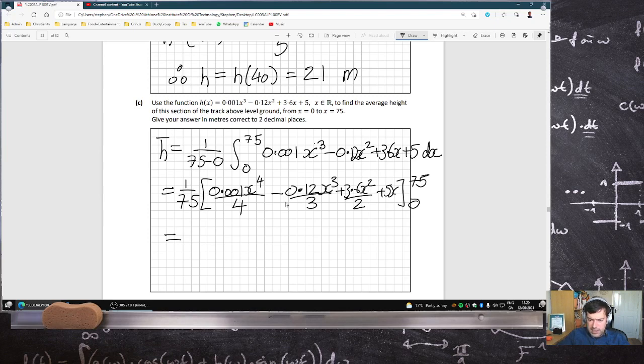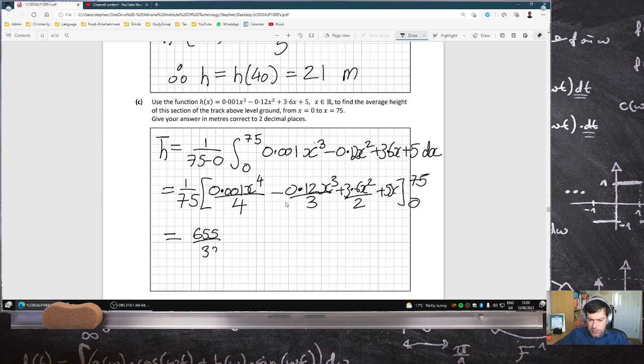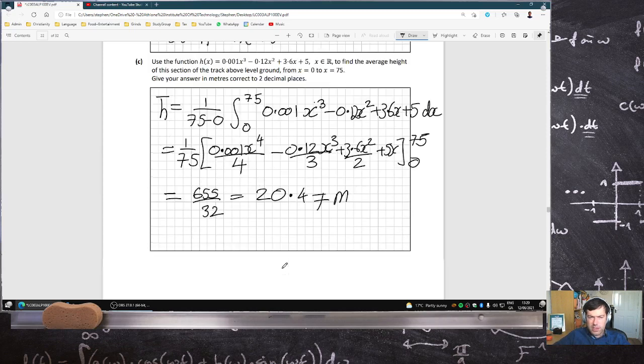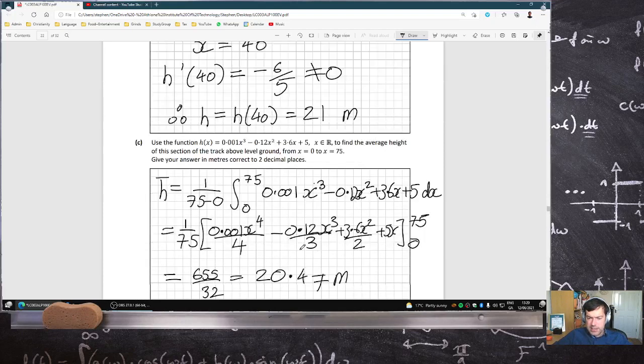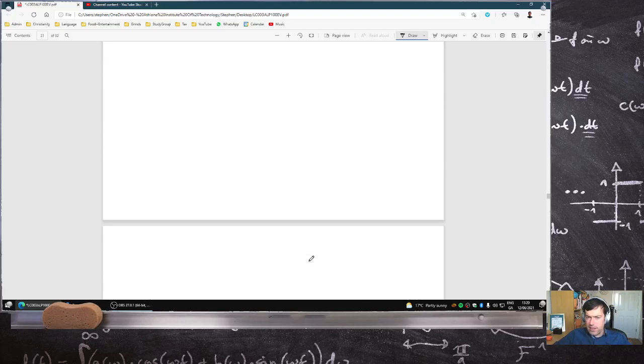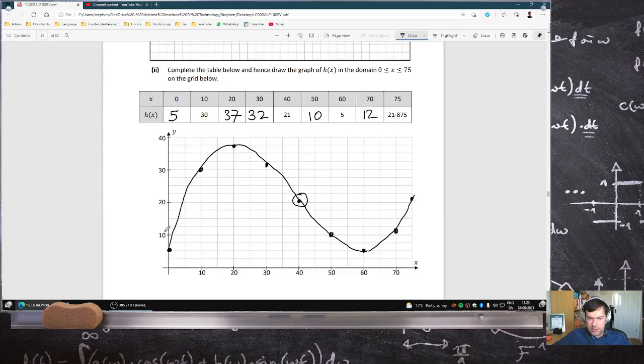Two decimal places, it'll be 655 over 32, which is 20.47 meters. Oh, that's the end of that question. Let's see, does 20.47 look like a reasonable average height? Yeah, it does indeed.